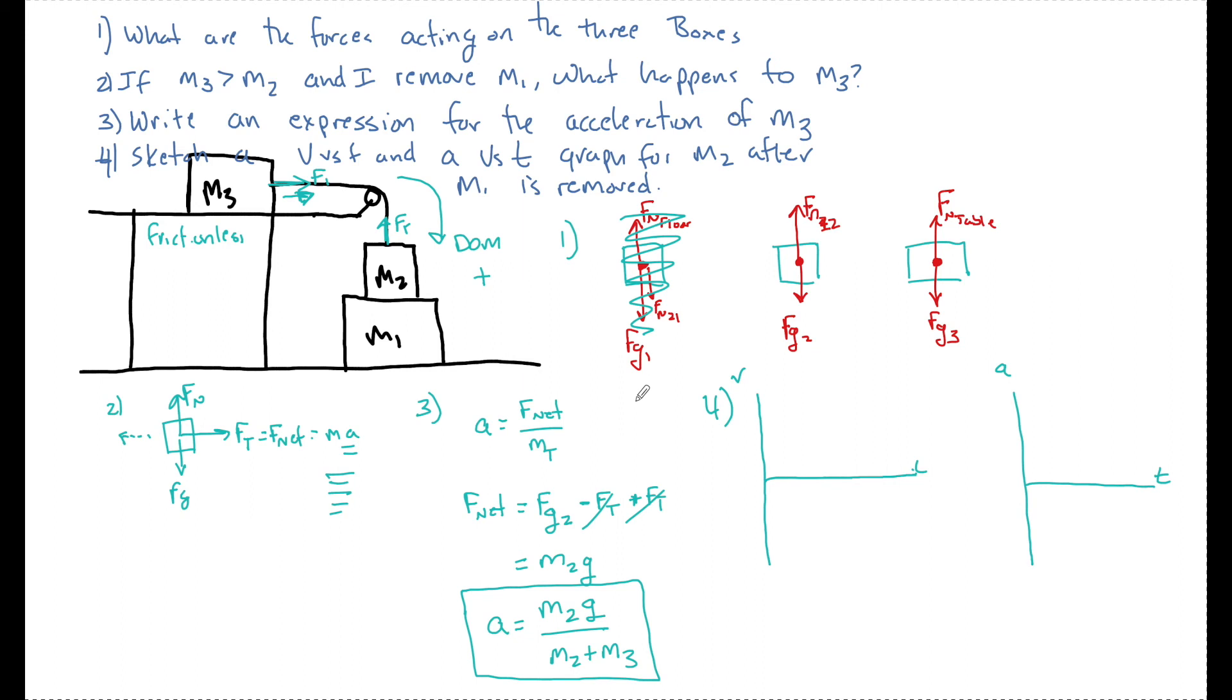And we know that the thing accelerating the box is going to be gravity. Now, it's not 9.8 meters per second squared. It's not 10 meters per second squared. That's for an object in free fall, right? This M3 is going to slow it down, but it's still going to be a constant acceleration because the F net, this M2G is going to be constant. So I'm going to have some positive acceleration.